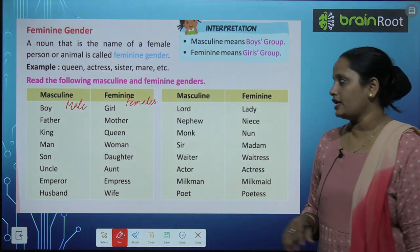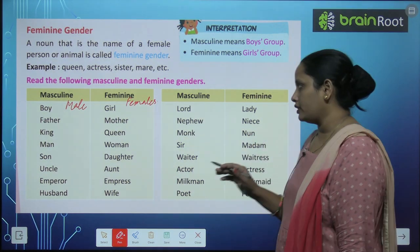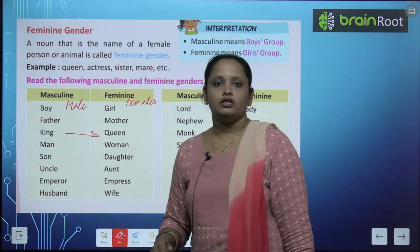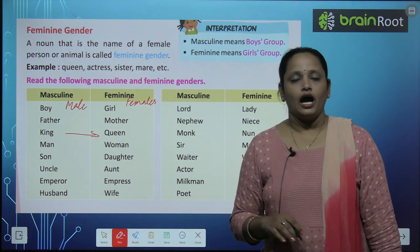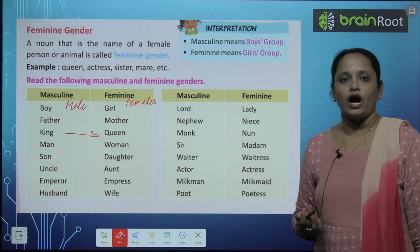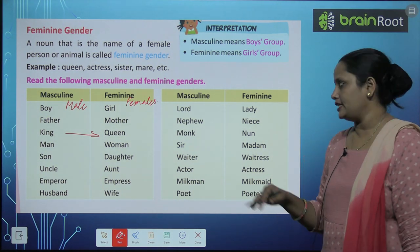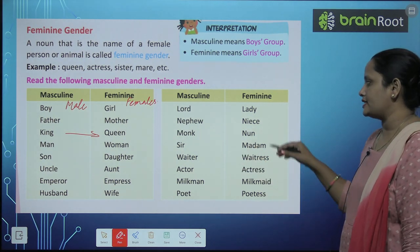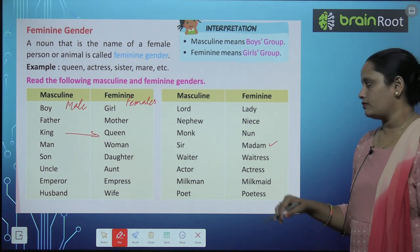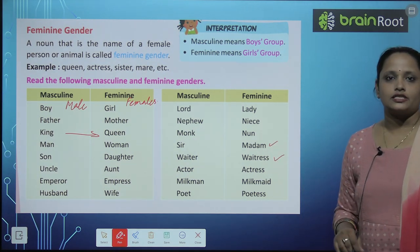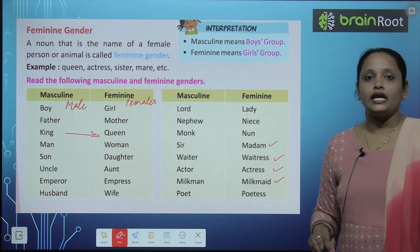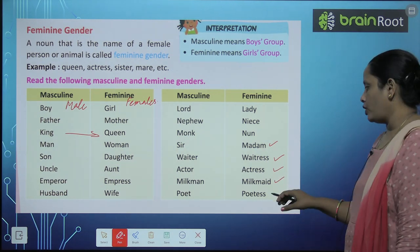Boy — girl. Father — mother. King — queen. Man — woman. Son — daughter. Uncle — aunt. Emperor — empress. Husband — wife. Lord — lady. Nephew — niece. Monk — nun. Sir — madam. Waiter — waitress. Actor — actress. Milkman — milkmaid. Poet — poetess. These are the masculine genders and these are the feminine or female genders. You have to learn these.